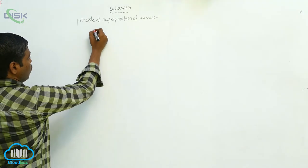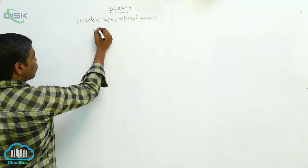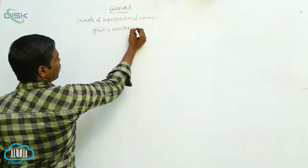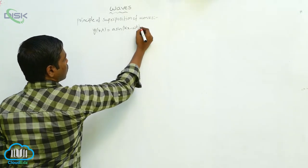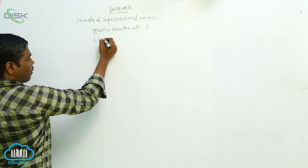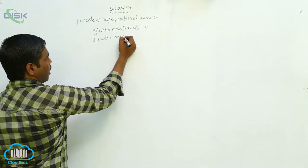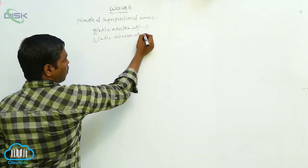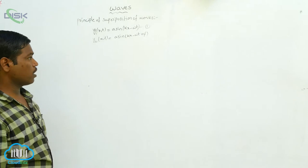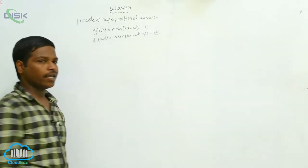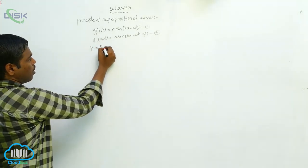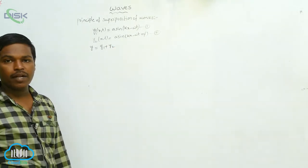Here I am taking a wave: y1(x,t) = a sin(kx − ωt). This is equation 1. I am also taking a second wave: y2(x,t) = a sin(kx − ωt + φ). When these two waves travelling in a medium superimpose on each other, the resultant displacement y is equal to the algebraic sum y1 plus y2.